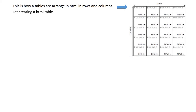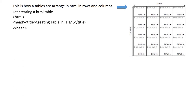Let's create a simple example of an HTML table so we can see how a table is arranged. First we start with our HTML tag to signify an HTML document, then the header with the title 'Creating a Table in HTML', then close the header tag, then open the body tag.